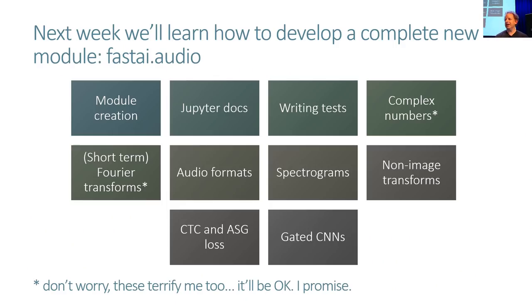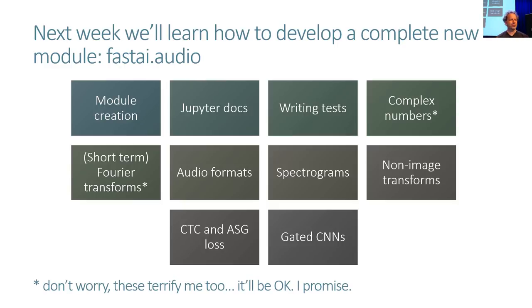From next week, we'll start developing a completely new FastAI module called FastAI.audio. You'll see how to create modules, write Jupyter documentation and tests, and learn about audio — complex numbers and Fourier transforms. Don't worry, the bits we need to learn are not at all bad. We'll be learning about audio formats and spectrograms, doing data augmentation on things that aren't images, and particular kinds of loss functions and architectures for audio.